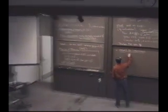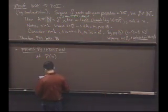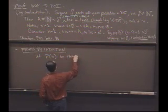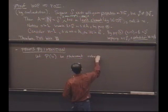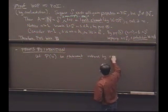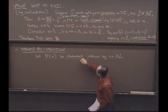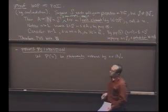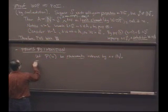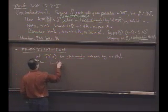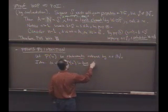And so normally you think of a collection of statements, which I'll just call P of n. Let P of n be statements indexed by the natural numbers. And so the idea then is to show P of n is true for all n.